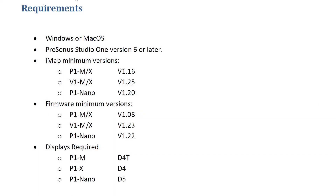These are the requirements for using the script. They run on Windows or Mac. You have to have Studio One version 6 or later. These are the IMAP versions that you need — the minimum versions. And these are the minimum firmware versions you need. Look up whatever unit you've got and make sure you're up to date on the firmware and the IMAP.